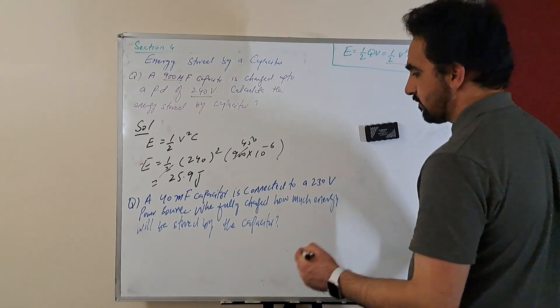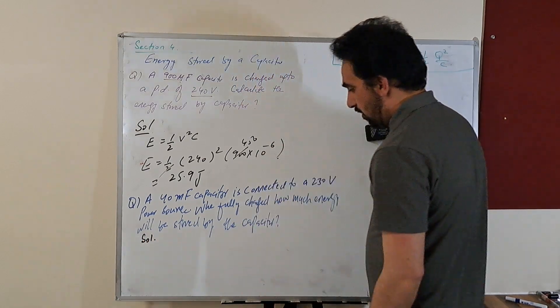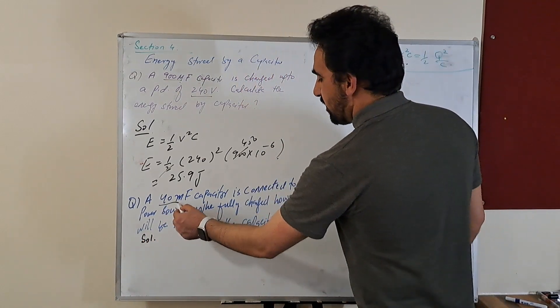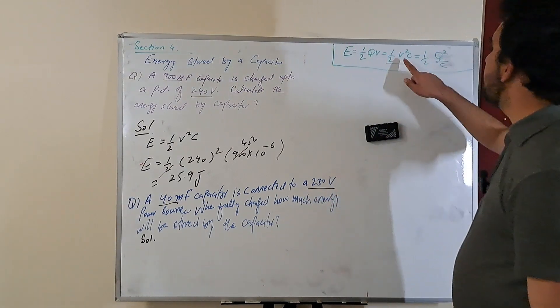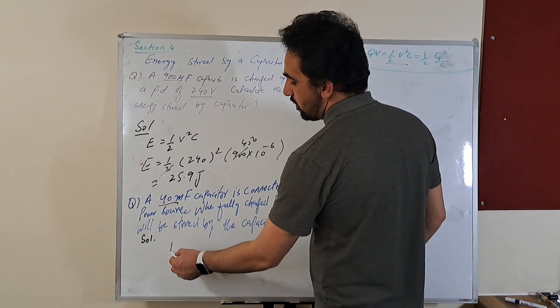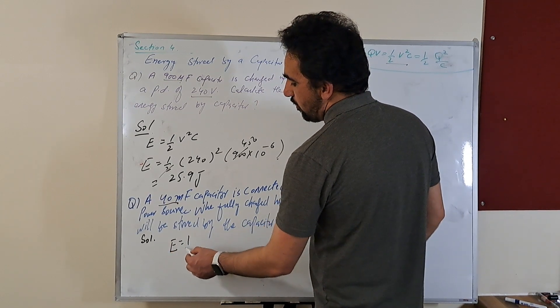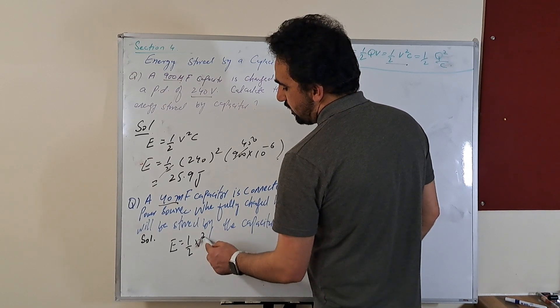Solution: now we got capacitance and we got the voltage. Again, we can use this formula to find the energy stored is equal to 1/2 V square C.